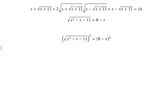So we will get x squared minus x minus 11. We have 64 minus 2x plus x squared.